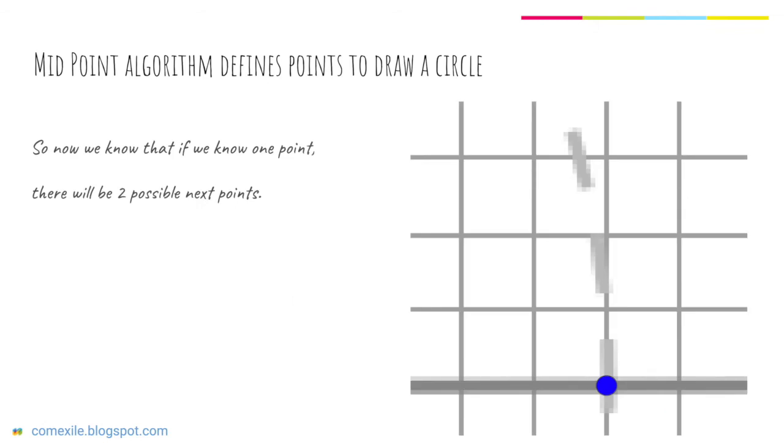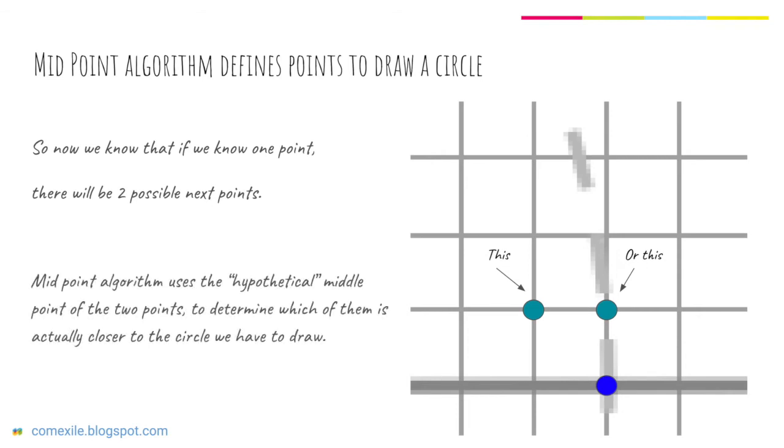So now we know that if we know one point there will be two possible next points. The midpoint algorithm uses a hypothetical midpoint between the two points to determine which of them is actually closer to the circle we have to draw.